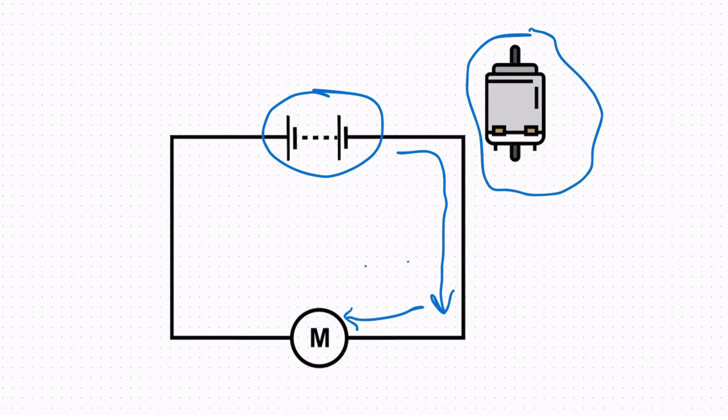A couple of other examples to be aware of: when an energy transfer happens mechanically, it's when a force makes something move — an example of that could be a wind-up toy. Another transfer is when energy is transferred from a hot object to a cold object and it increases the object's temperature.